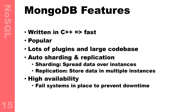Why MongoDB? It's written in C++, so it's very fast and very good. It's used in large companies and enterprise projects. It has lots of plugins and a large community with lots of documentation. It has auto sharding and replication. Sharding means spreading data over instances — a PC in New Zealand, Japan, and Belgium all running at the same time. Replication means that when you save data, MongoDB automatically duplicates it to different databases or instances, so with an outage you can easily switch and have no issues. It also has high availability and many failover systems.